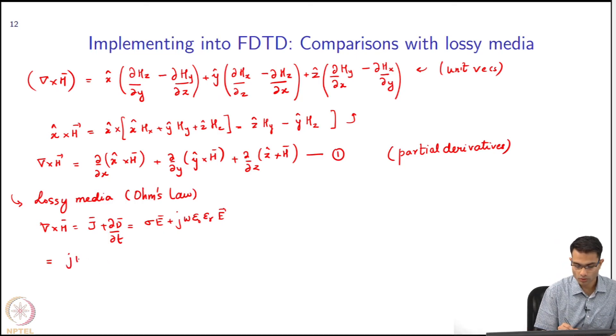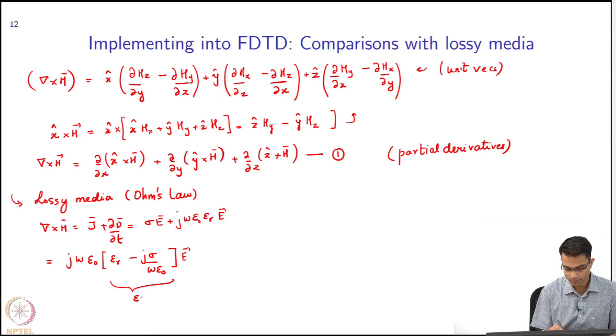So I can write this as jωε_0 times (ε_r minus jσ/(ωε_0))E. This we have already seen. You can call this ε'. So you might have guessed why we are taking recourse to lossy media: because we have already given the interpretation that PML with coordinate stretching is like a lossy anisotropic media. We can use something that we already know.